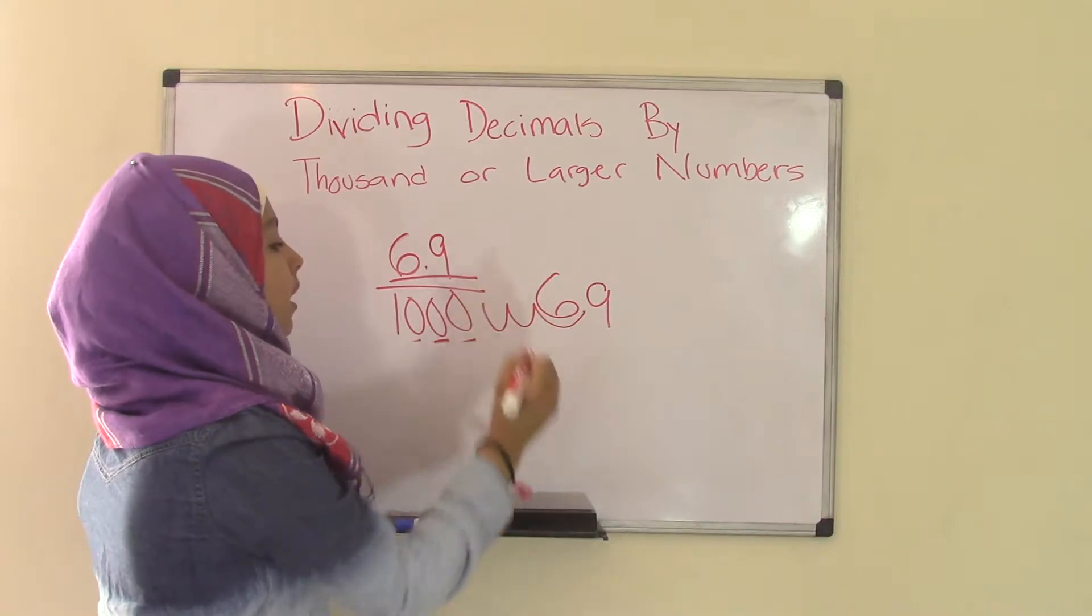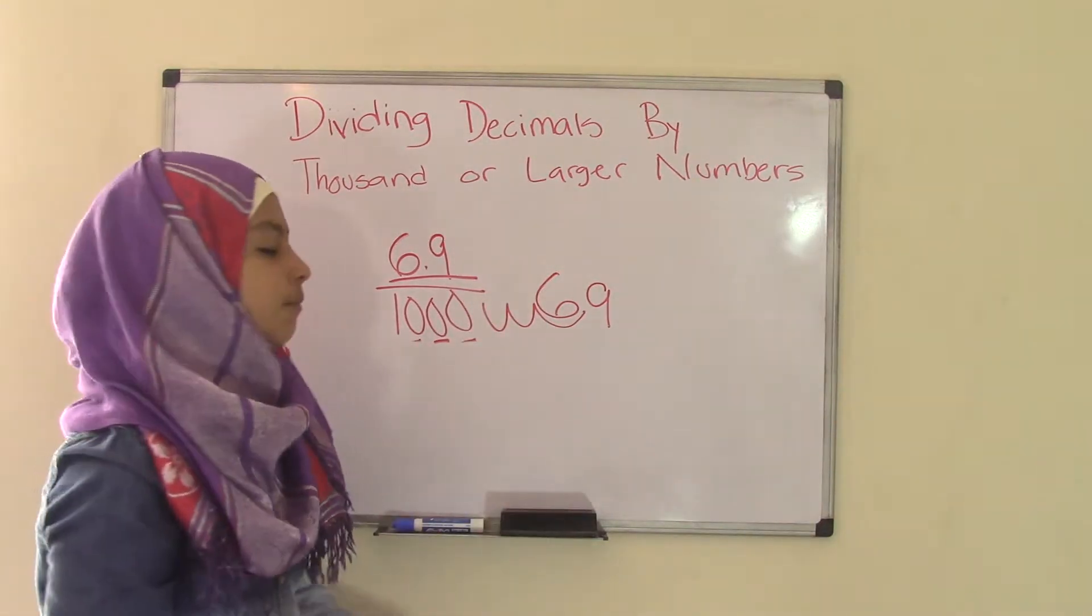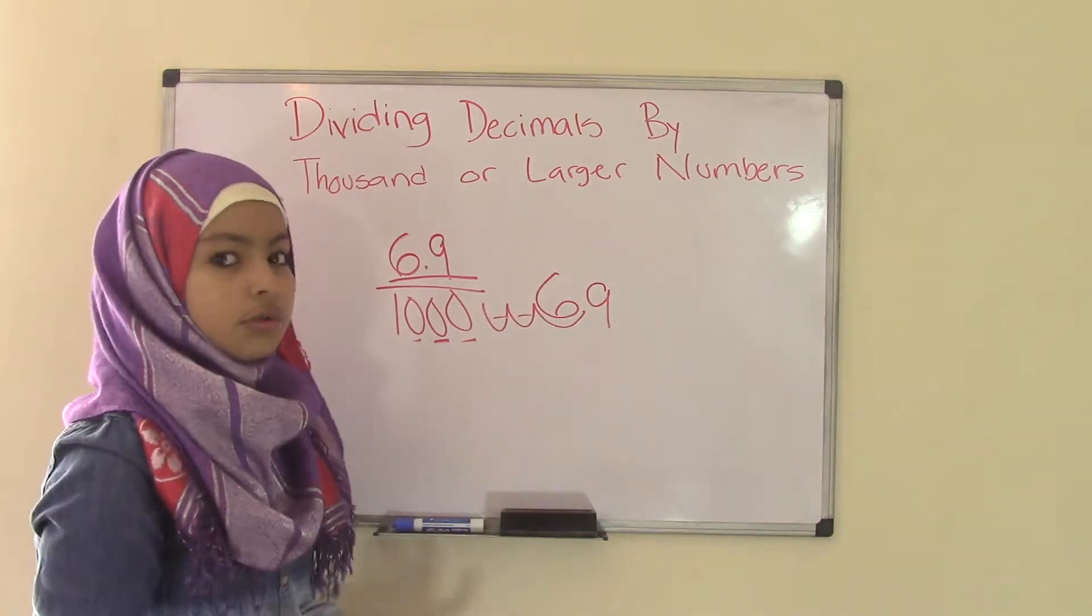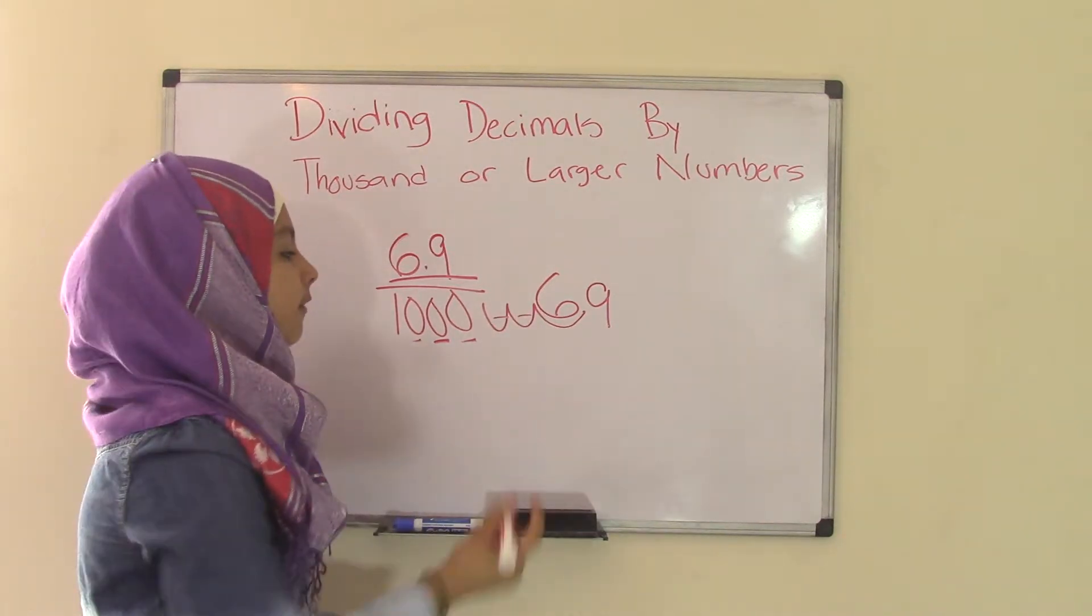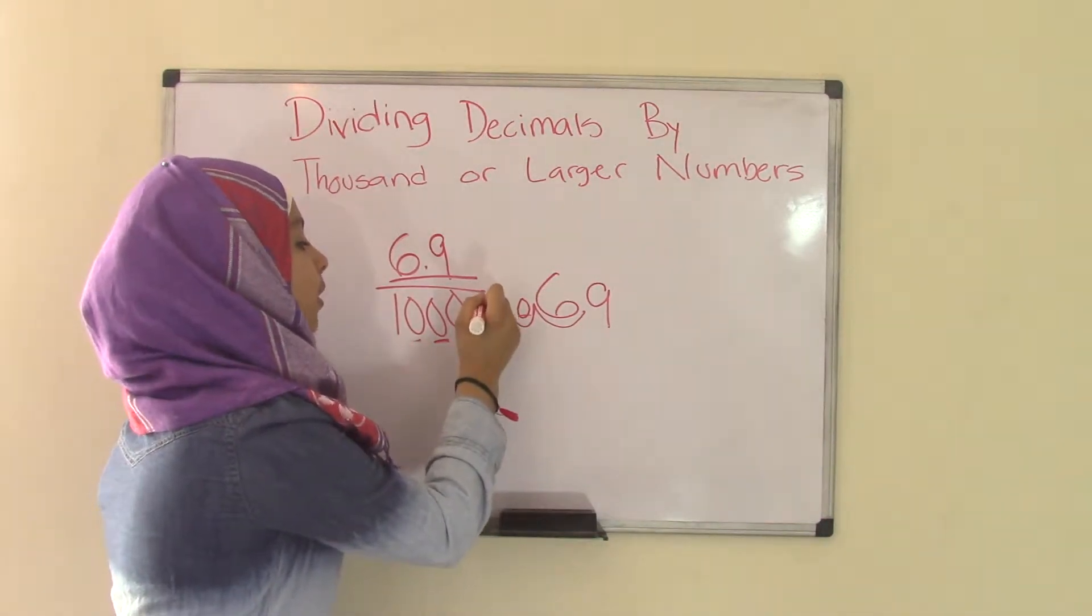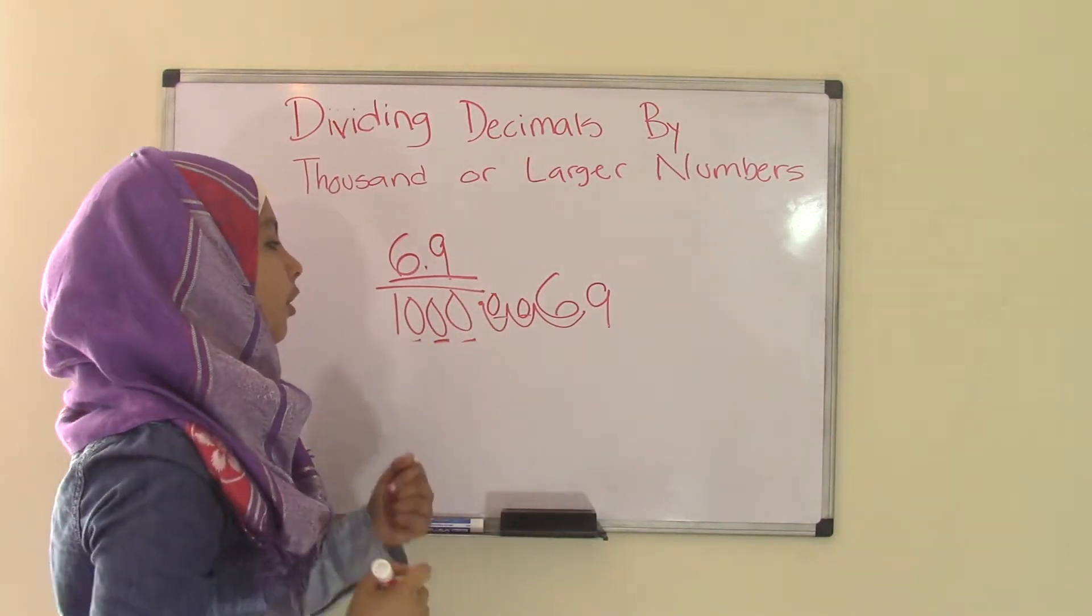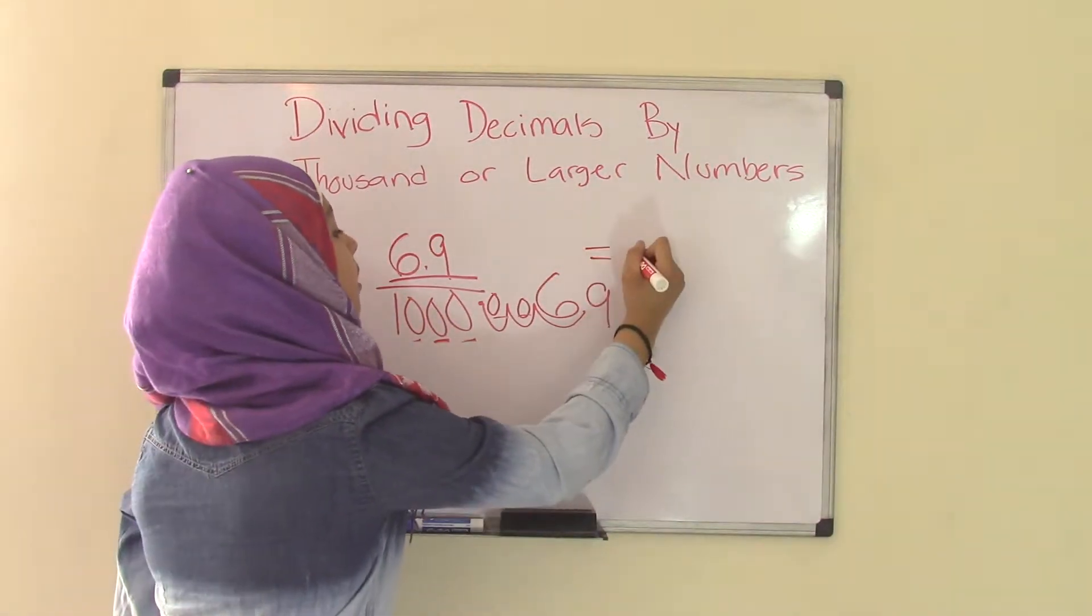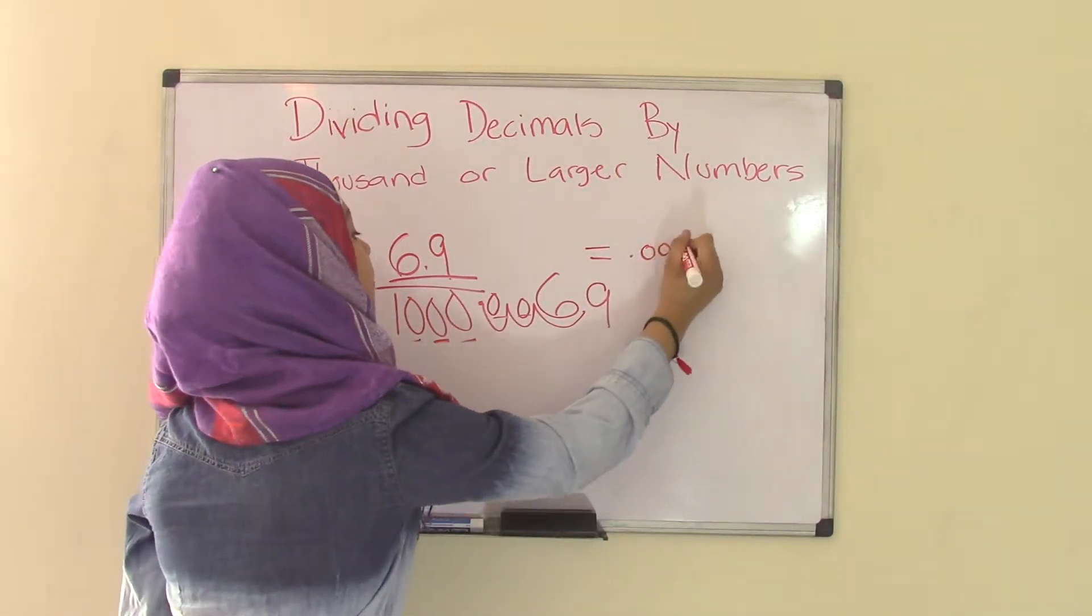Right to left decreases. So if we take this decimal point and move it right to left three spaces, 1, 2, 3, that will decrease the value. Now as you can see, we have two gaps here. What do we do with the two gaps? All we have to do is add zeros in the gaps. That means the decimal point is going to be over here. So the quotient of 6.9 divided by 1,000 equals 0.0069.